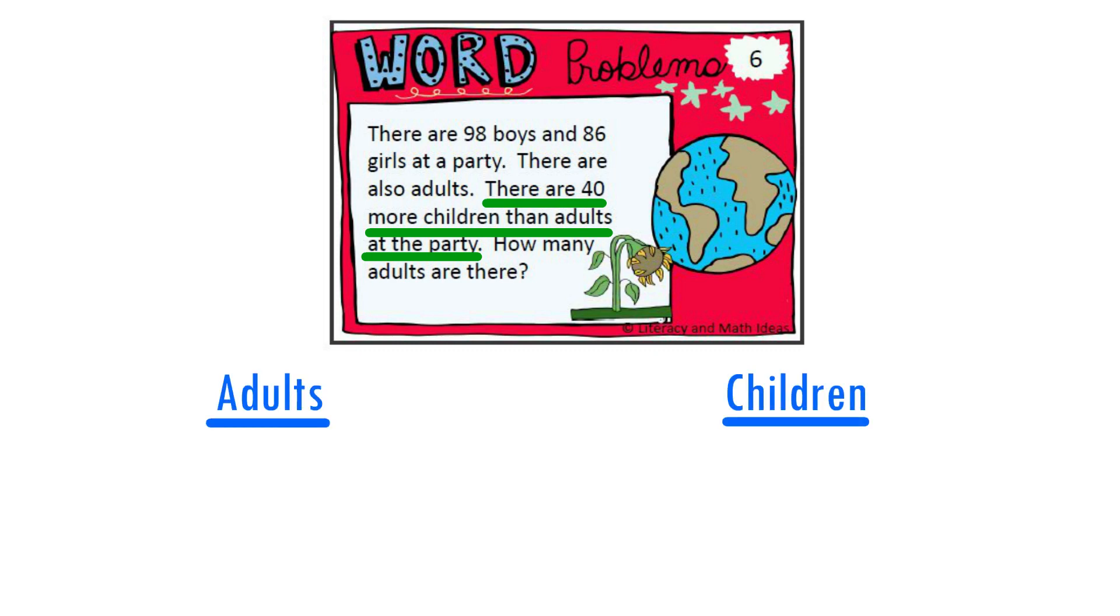Let's try to organize the information that we are given. For children, if there are 98 boys and 86 girls at the party, how many children are there total? To find out the total number of children, we are going to have to add. So, 98 plus 86 equals 184.